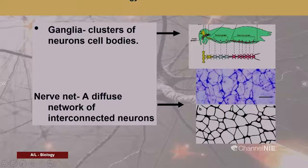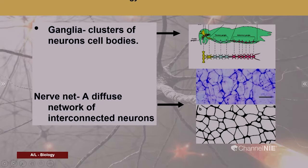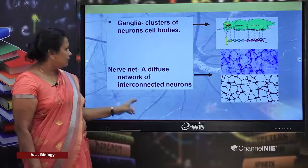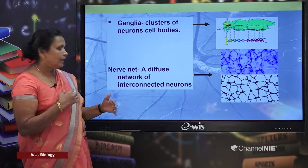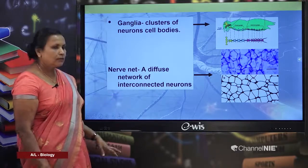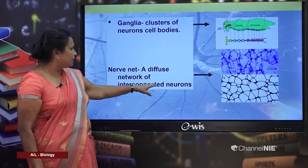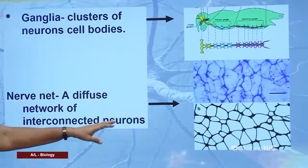The next important word is ganglia. Ganglia are clusters of neuron cell bodies. As seen in the diagram, arthropod ganglia run along the length of the organism. The nerve net, as explained in cnidarians, is a diffuse network of interconnected neurons. The diagram shows the microscopic weave of neurons forming the nerve net.